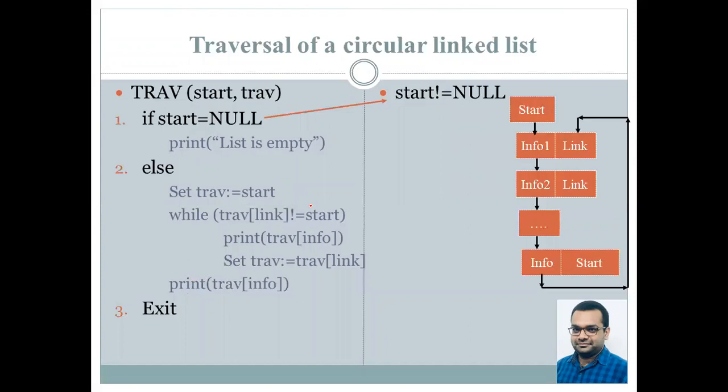Say suppose we are given this linked list. So clearly traversal, we can see over here that start's link is not equal to null. So therefore this statement will not be printed. Now the control jumps to the else part. We initialize traversal with the value of start, that is the address of the first node.